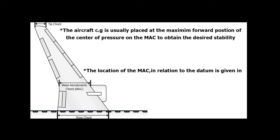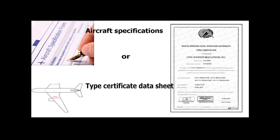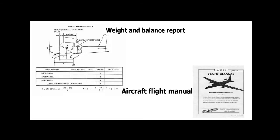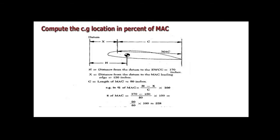The location of the MAC in relation to the datum is given in aircraft specifications or type certificate data sheet, weight and balance report, or aircraft flight manual. To compute the CG location as a percent of MAC: H equals distance from the datum to the EWCG; X equals distance from the datum to the MAC leading edge; C equals length of MAC. CG percent of MAC equals (H minus X) divided by C, multiplied by 100.